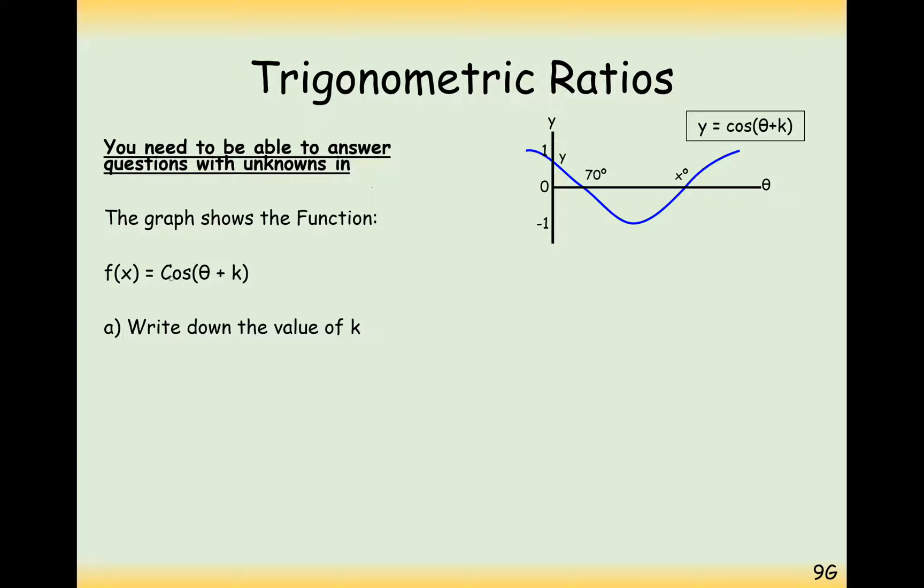Let's have a go at this question here now. So it's cos theta plus k. So we've obviously moved it left by some amount because the transformation is inside the brackets. I assume here k is positive. Write down the value of k. Well, here we've got an intersection at 70, so this is going to be our clue here. Usually it would intersect at 90 degrees. So, therefore, k must equal 20 degrees because we've moved left by 20 degrees on the x-axis.